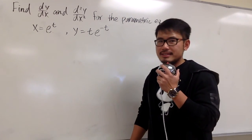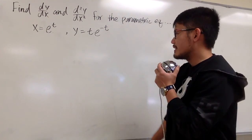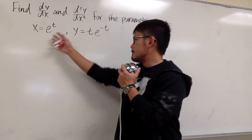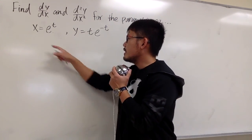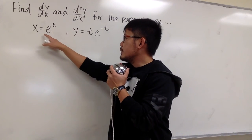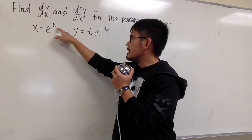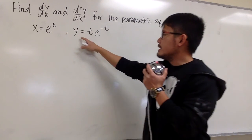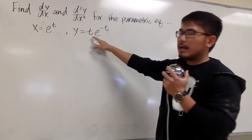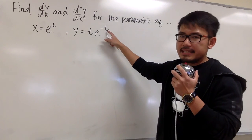We are going to find dy/dx and d²y/dx² for this parametric equation, where x is equal to e to the t, and y is equal to t times e to the negative t.